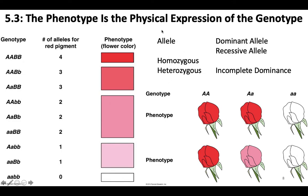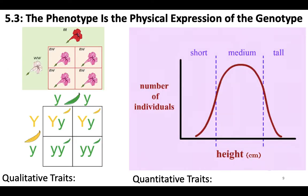An allele is a variant of a gene. If you are homozygous, in a diploid organism you have two copies of the same allelic variant. Heterozygous means you have two different alleles for one gene in a diploid individual. Review these terms in your textbook — these are the units on which natural selection is going to act.